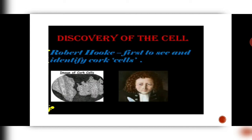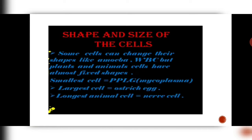Who discovered the cell? Robert Hooke in the year 1665 discovered cell in a piece of cork. He cut a very thin slice of cork and kept it under a primitive microscope and observed it. He could see certain compartments under the microscope and those compartments he named cellule. Cellule being a little typical term, only the cell part was used and from then onwards they were called cell.